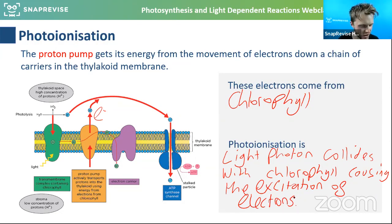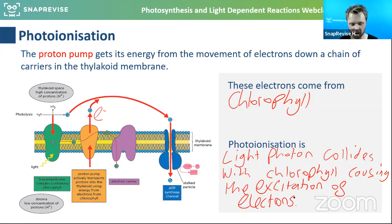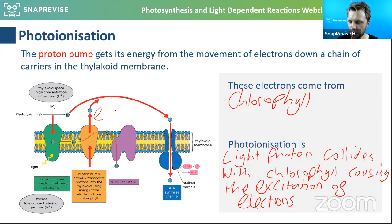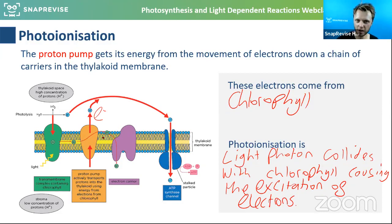In summary: electrons become excited through photo ionisation, they move down the electron transport chain — that releases energy — so hydrogen ions can move through ATP synthase, generating ATP.